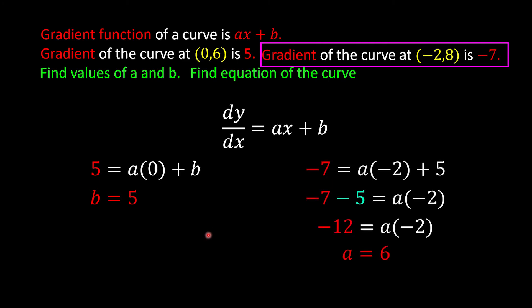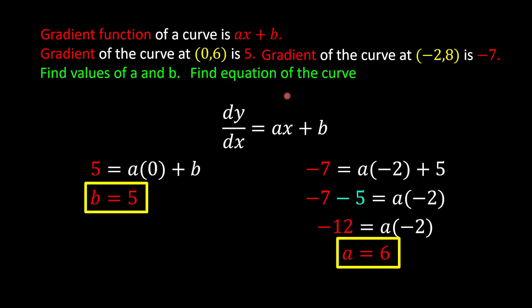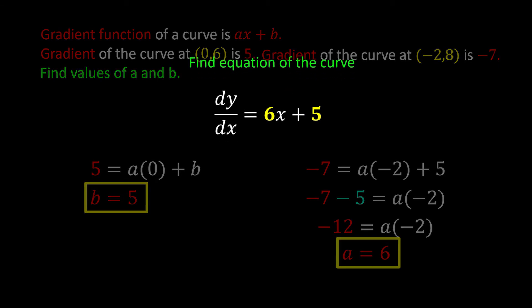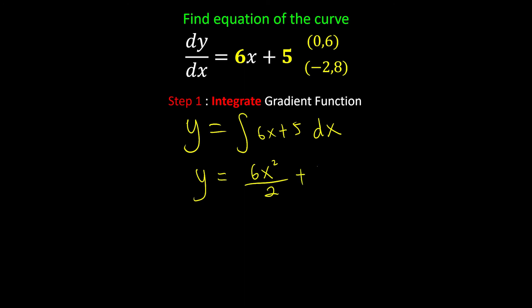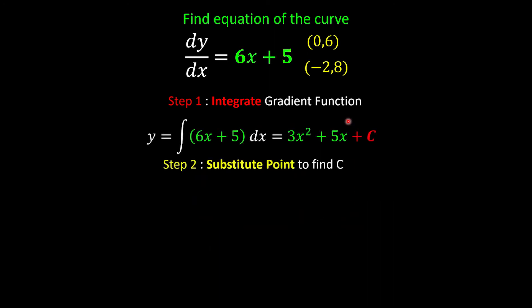After finding a and b, we substitute back into the gradient functions to get dy over dx equals 6x plus 5. Now the gradient function is no longer in terms of unknowns. Since we have the gradient function and a point on the curve, we integrate: y equals the integration of 6x plus 5 with respect to x. Increasing the power by 1 and dividing by the new power gives y equals 3x squared plus 5x plus c, but this is incomplete because we still have c.